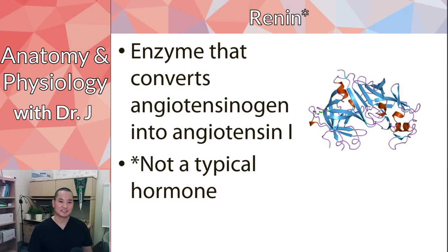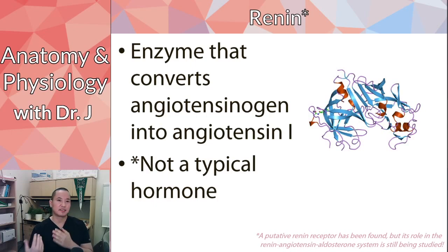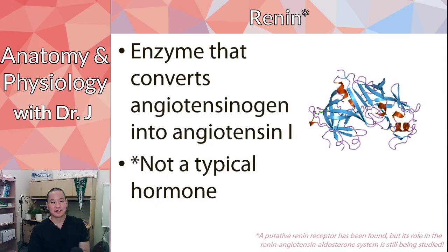There is a paper about a renin receptor, but it's relatively recent and only from one lab, so there hasn't been an update about whether it actually causes signaling and changes inside cells. The part you should focus on is that renin converts angiotensinogen to angiotensin 1 — think of it as more of an enzyme than a hormone.